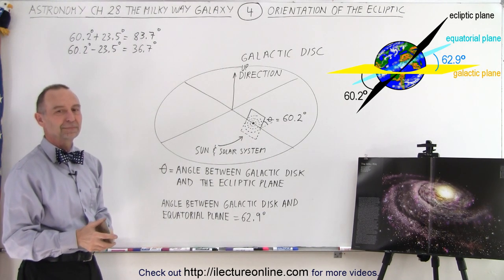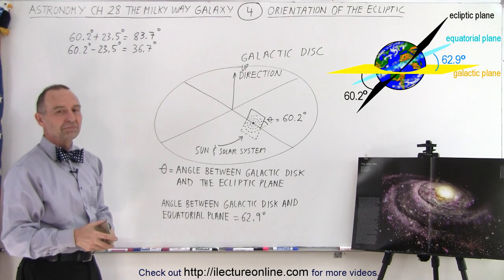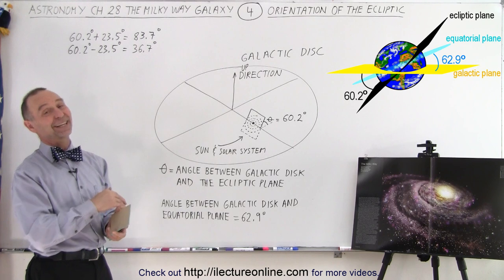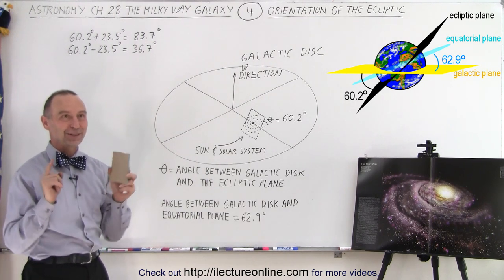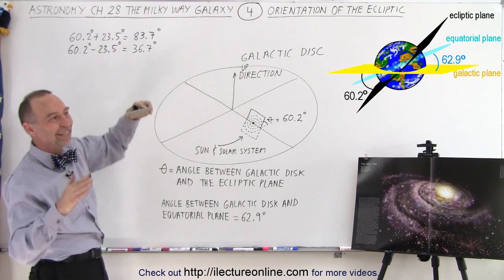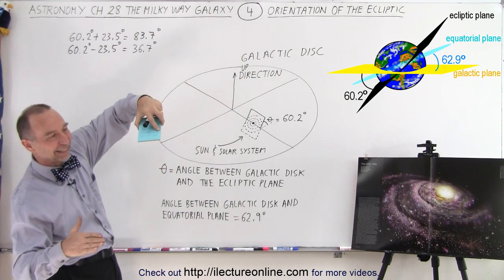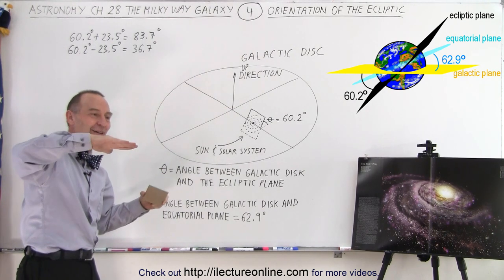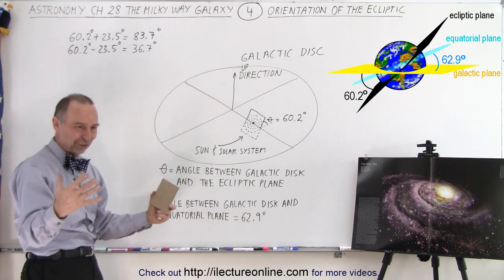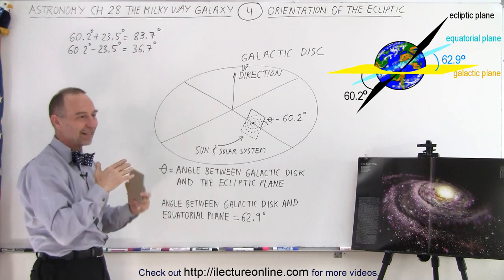But does that really matter that much in the galaxy? Well, the galaxy doesn't care, but we care when we're looking out. We're trying to get an orientation of the angle of what the galactic plane is and the angle of the equatorial plane, because that's relative to the Earth's surface. You're always looking out.